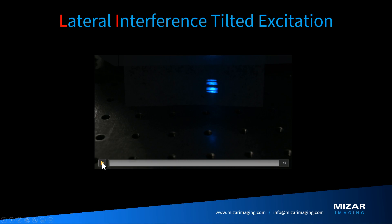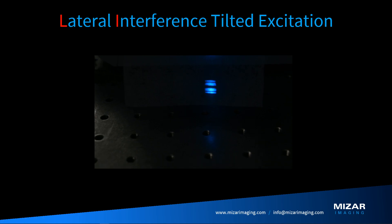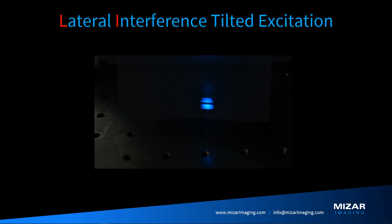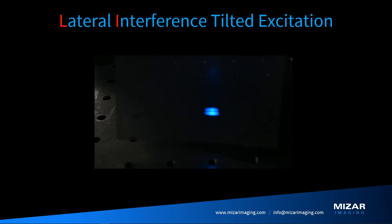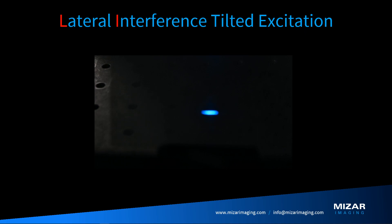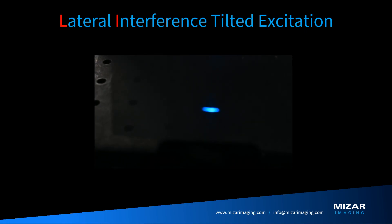Here's a demonstration: we placed a business card in the light path. As we bring the card close, you can see the four sheets converge together to form a single sheet, and then as it moves back, the sheets diverge again.